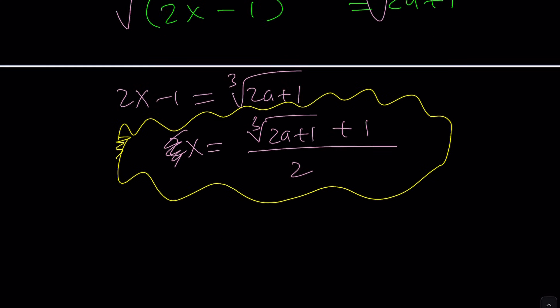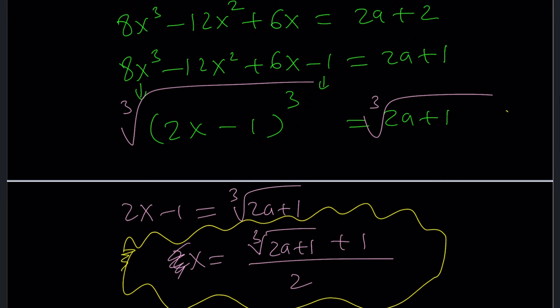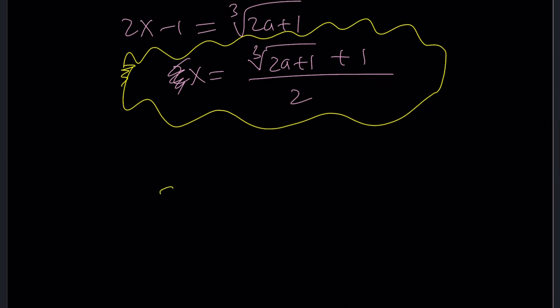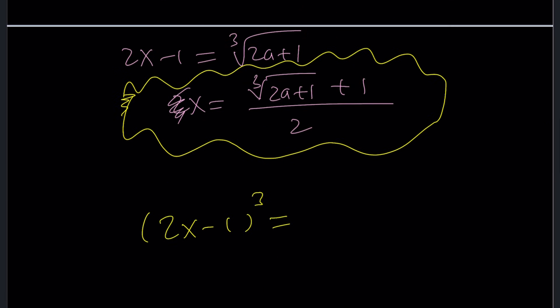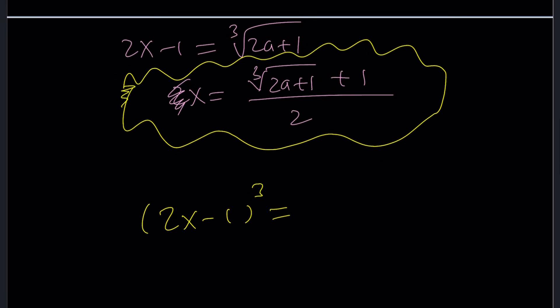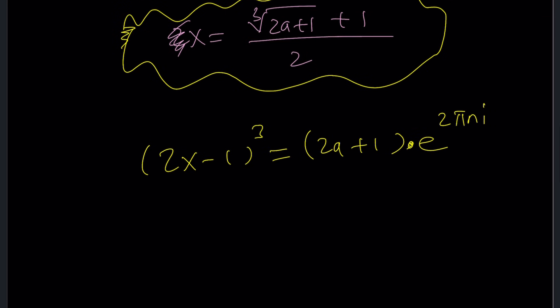But if you were looking for complex solutions, you could do the following. Instead of just cube rooting this, you could multiply by the cube roots of 1, both sides, because you could basically write this as follows. So you can kind of write it as, this was 2a + 1. And this could be multiplied by e^(2πni), which is 1 in the complex world. And then when you do the cube roots, you should be getting something like 2x - 1 equals the cube root of 2a + 1, which is a real valued cube root. The real cube root.